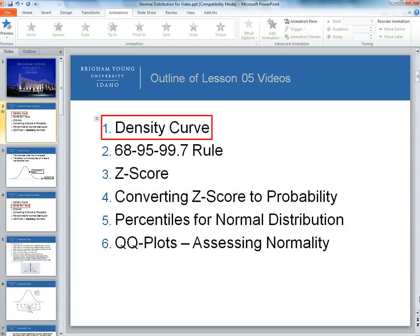First of all, we'll be talking about the density curve, what is a density curve, and we'll discuss the 68-95-99.7 rule, followed by z-score, what is a z-score and why do we use it, and some of that why is going to step 4, which is converting the z-score to a probability. Then number 5 is calculating percentiles for normal distributions. In Lesson 3 we talked about percentiles, but we're going to get into more fully how we can calculate a percentile with a normal distribution. And then step 6 is QQ plots, and those are the plots that we can use to assess normality.